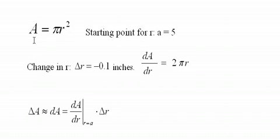where A is the dependent variable. The variable we're trying to estimate the change of, and then we have the independent variable r. We're also given a starting point here. That is, we say that the radius starts at 5, and then it changes to some other value. So our starting point for r is 5, and we'll label that as a.